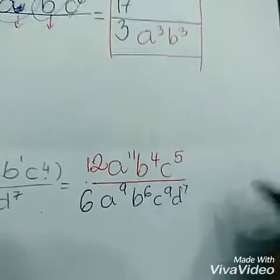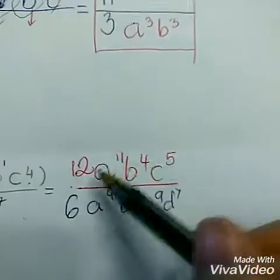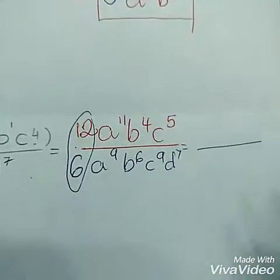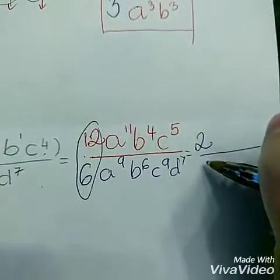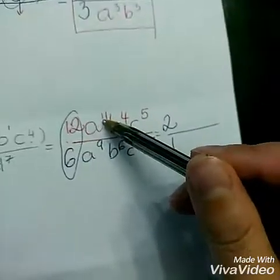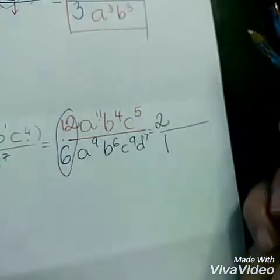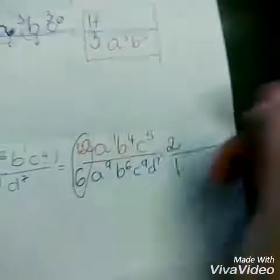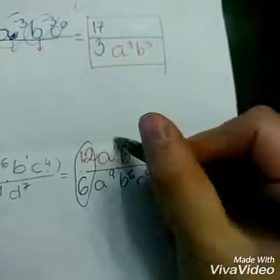From now on it becomes the division problem we know how to do. We divide 12 by 6 — if you're not sure, use the calculator — and that gives you 2. In the bottom I have nothing, so I put a 1. A to the power of 11 divided by a to the power of 9: when you divide same base, you subtract the power, top to bottom. 11 minus 9 gives you 2, so a to the power of 2.